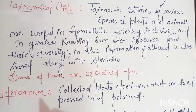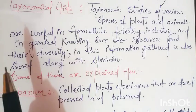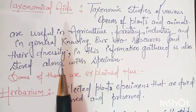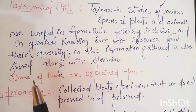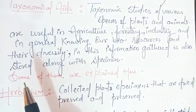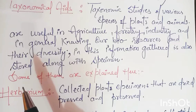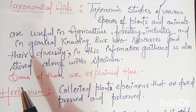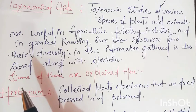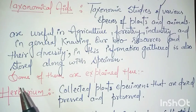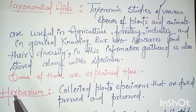Let's start with the topic — Taxonomical Aids. What is Taxonomical Aids? Taxonomical studies of various species of plants and animals are useful in agriculture, forestry, industry, and in generally knowing our biological resources or bio-resources and their diversity.